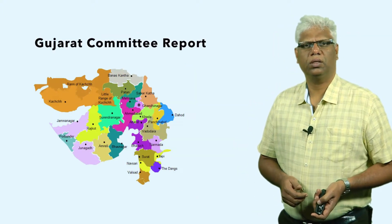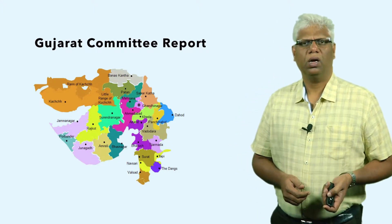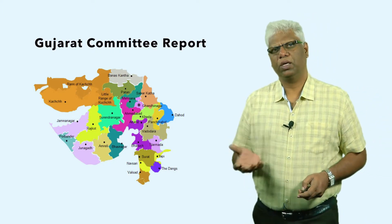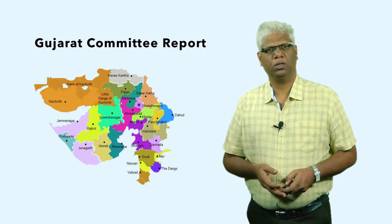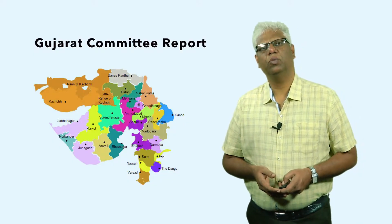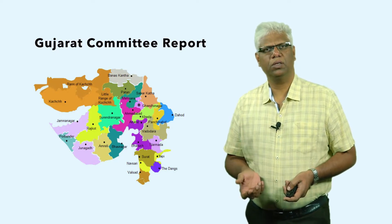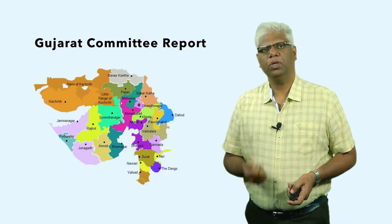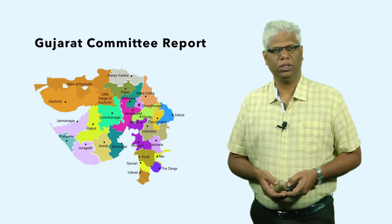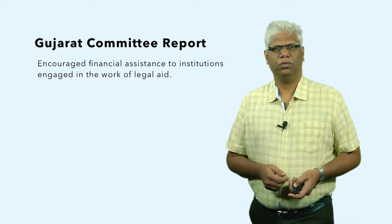Let us talk about the Gujarat committee report first. Though it is a state committee report, it is a very comprehensive report on how legal aid should be provided and how free legal aid could be secured. On 22nd June 1970, the government of Gujarat appointed a four-member committee under the chairmanship of Justice P. N. Bhagavati. This committee discussed at great length legal aid in civil, criminal, revenue, and labour matters, particularly affecting poor persons and persons belonging to backward classes. The committee also encouraged assistance from institutions engaged in law for providing legal aid.